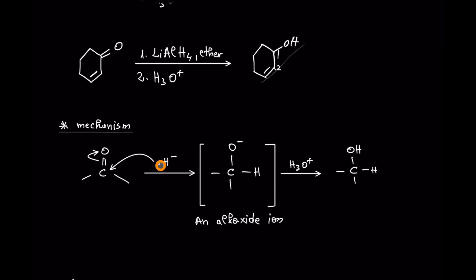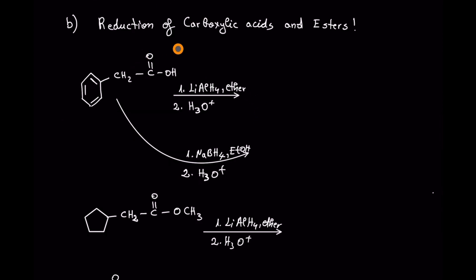From the name, sodium borohydride and lithium aluminium hydride are hydride reagents — that is, a hydrogen charged negatively — that is going to attack the carbon at the carbonyl group and form an alkoxide ion as an intermediate. After that it is going to be protonated by acidification to yield the alcohol.